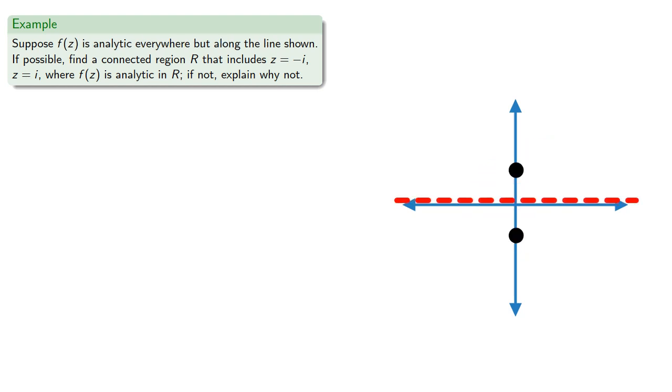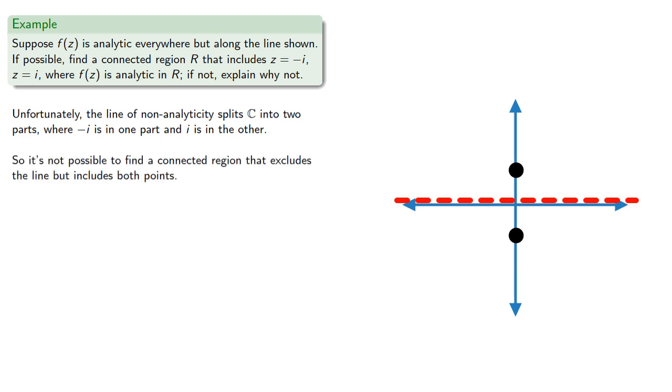What if we have an entire line of non-analyticity? Unfortunately, the line of non-analyticity splits our complex plane into two parts where negative i is in one part and i is in the other. So it's not possible to find a connected region that excludes the line but includes both points.